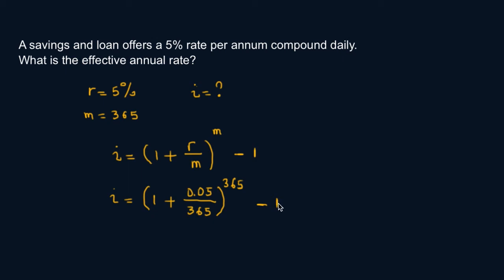So calculator: do 0.05 first divided by 365, plus 1, all to the power 365, minus 1, times 100.